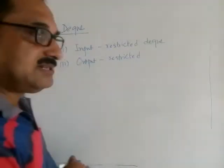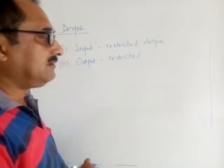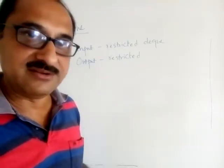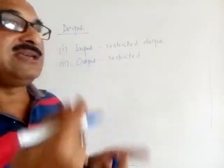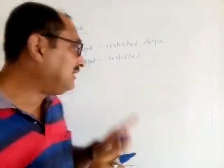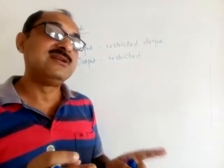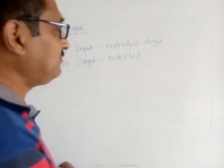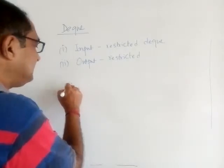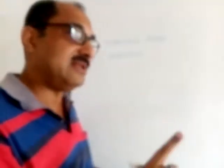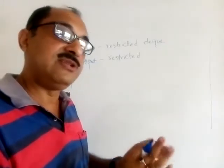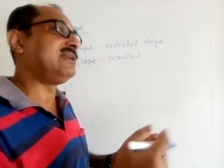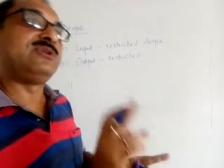In Input Restricted DQ, 'input' refers to insertion and 'output' refers to removal of an element. Input Restricted DQ says that insertion can take place only from the rear end — it follows the original property of a queue where insertion takes place only from the rear end.